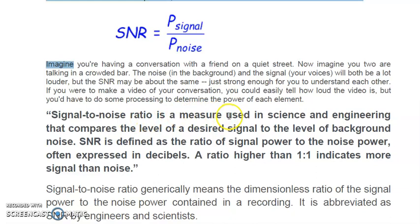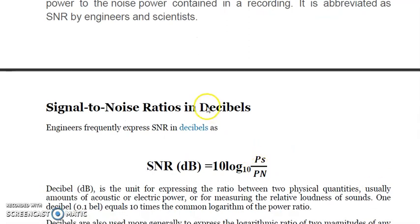Signal to noise ratio is the measure used in science and engineering that compares the level of a desired signal to the level of background noise, and it is measured in decibels. If both are equal — power signal equals power noise — the ratio will be 1:1. A ratio higher than 1 indicates more signal than noise. Since SNR is measured in decibels, the formula is: SNR (dB) = 10 log₁₀ (Ps / Pn).